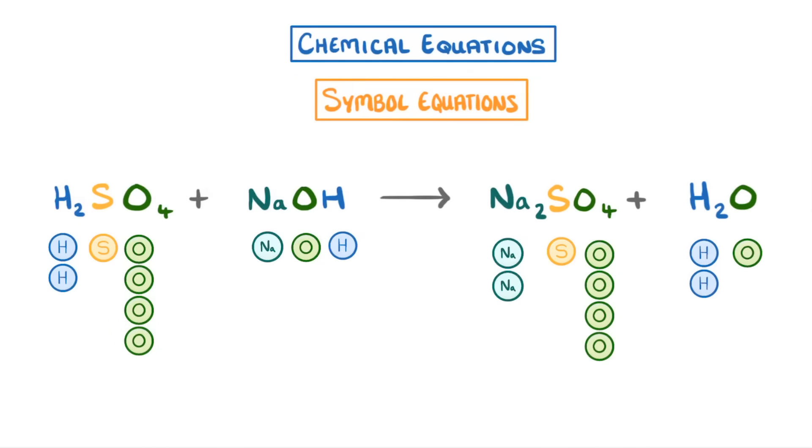Although it's up to you, I recommend balancing the least common elements first, which in this case would be sulfur and sodium. As sulfur is already balanced, with 1 on either side, I'd look at sodium, where we can see that we need 1 more on the left. So to fix this, I'd put a 2 in front of the sodium hydroxide, giving us 2 sodiums.